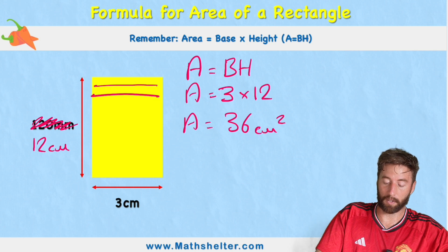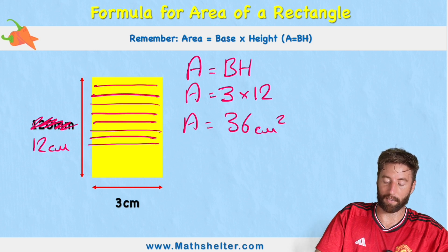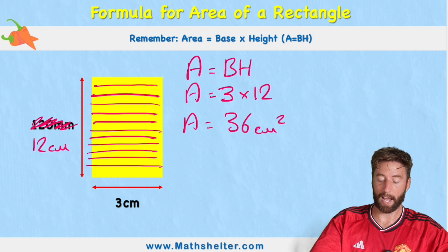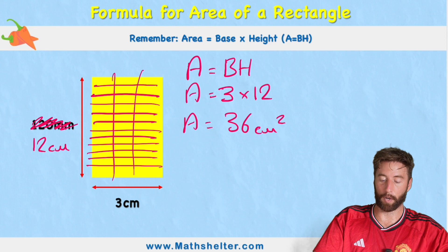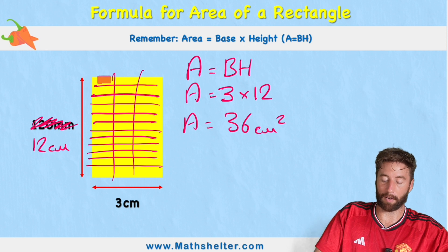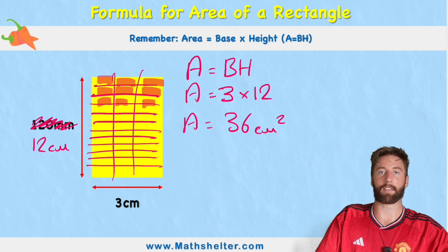Well done, because this shape has been split into 12 rows — 1, 2, 3, 4, 5, 6, 7, 8, 9, 10, 11 and 12 — and 3 columns — 1, 2, 3. All we're doing is counting these individual blocks, which are each centimetre squares, and we have 36 of them.